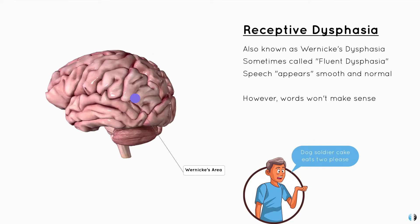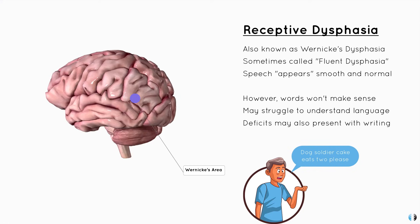Patients with receptive dysphasia may also have difficulty in understanding language — when you speak to them, or when they read something, they can't grasp what is being said or read. It may also be that their deficits present themselves when they are writing; they may try to write something, but again, it doesn't make sense on paper.